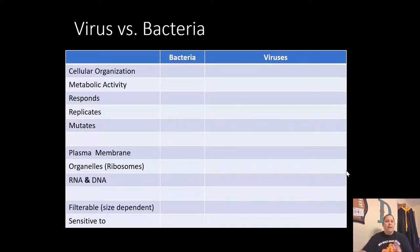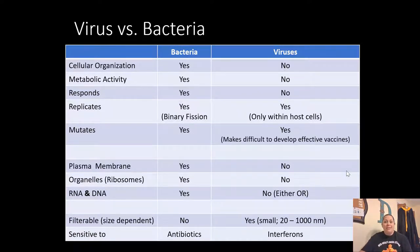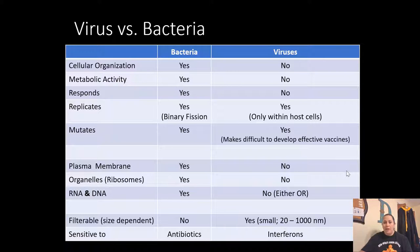Let's compare bacteria and viruses, because they often get lumped together but they are not the same. For cellular organization, bacteria has it; viruses don't. Metabolic activity: bacteria has it; viruses do not. Bacteria can respond; viruses cannot — again showing that viruses are not living things. Bacteria replicates through binary fission, and viruses can replicate too, but only if they get inside a host cell. Both bacteria and viruses mutate, which is why it can be difficult to develop vaccines against some viruses. Bacteria has a plasma membrane; viruses do not.